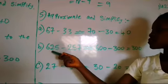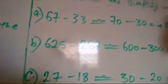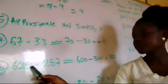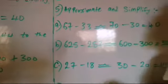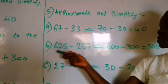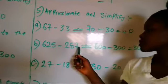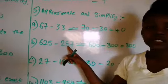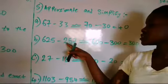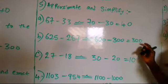Then we have another one here, 625 minus 257. So approximate it. 5 is 5, so round it up to 1 and put it here, making it 3. 3 is not up to 5, so round it down to 0. So we are left with 600. You bring a minus sign. Then you round this one up to 1, putting it here, so we have 6. You round this one up to 1, put it in the 2. We have 300. 600 minus 300 will give us 300.